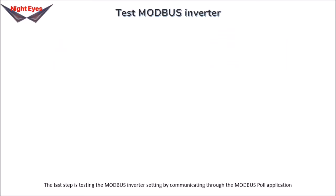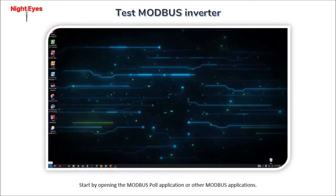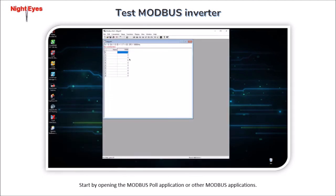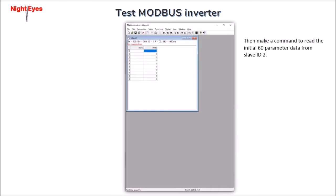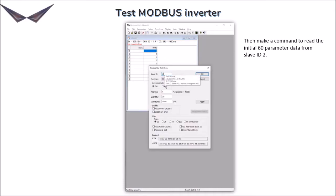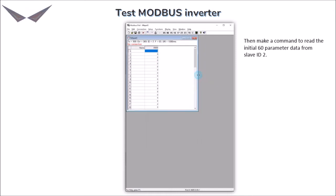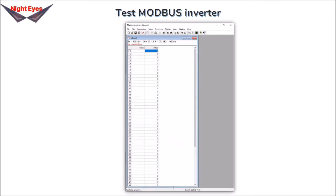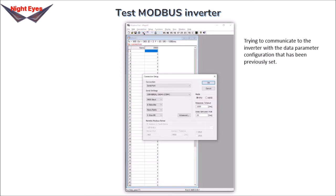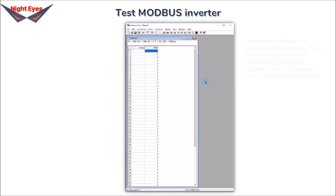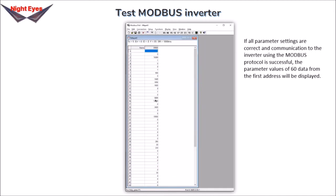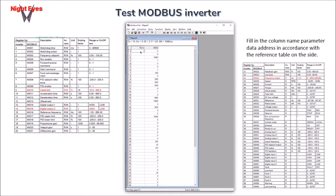The last step is testing the Modbus inverter settings by communicating through the Modbus Poll application. Open the Modbus Poll application, then make a command to read the initial 60 parameter data from Slave ID 2. Attempt to communicate to the inverter with the configured data parameters. If successful, the parameter values of 60 data from the first address will be displayed. Fill in the parameter data address column according to the reference table.